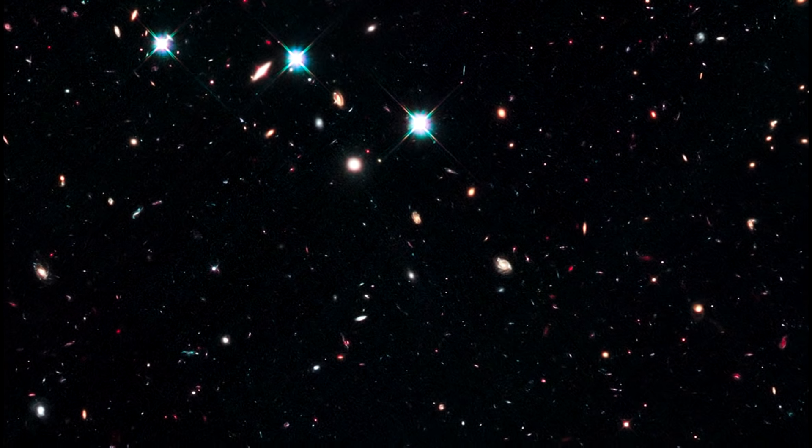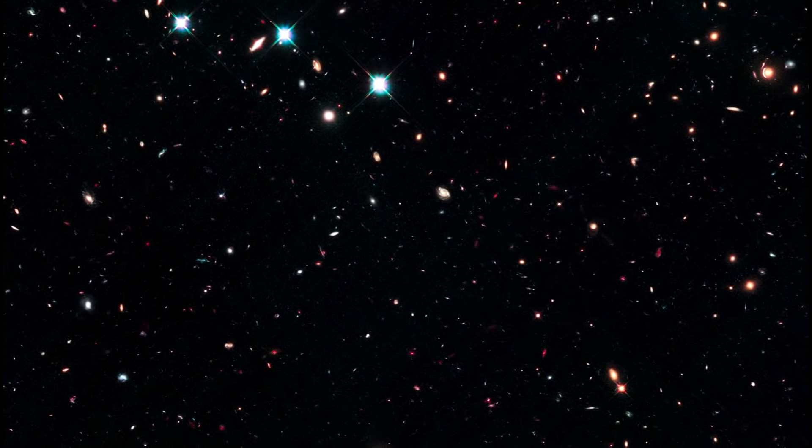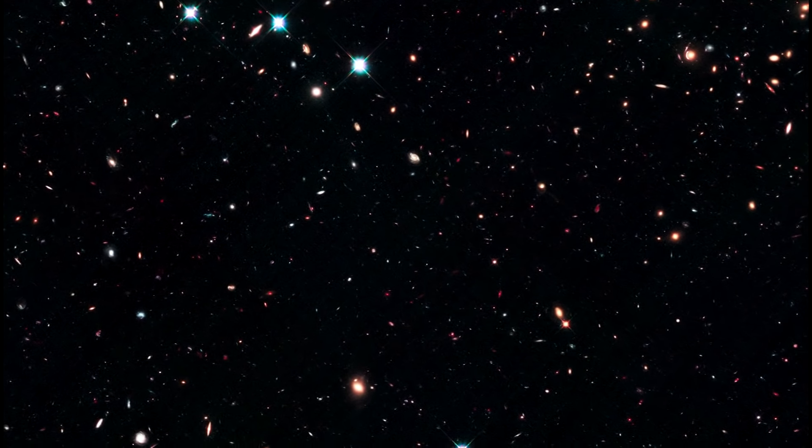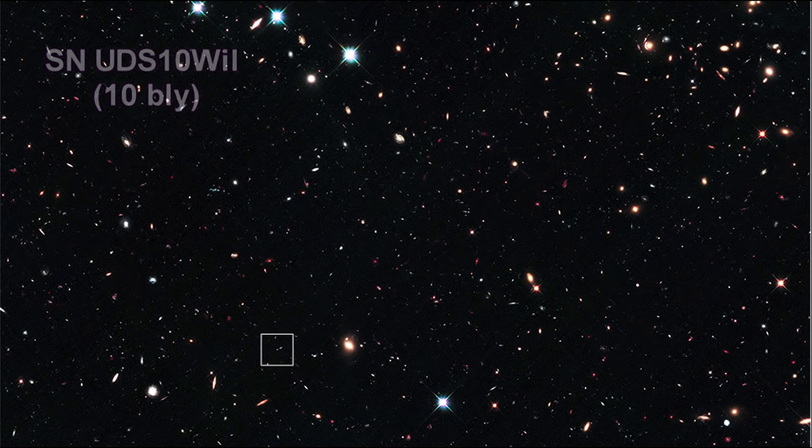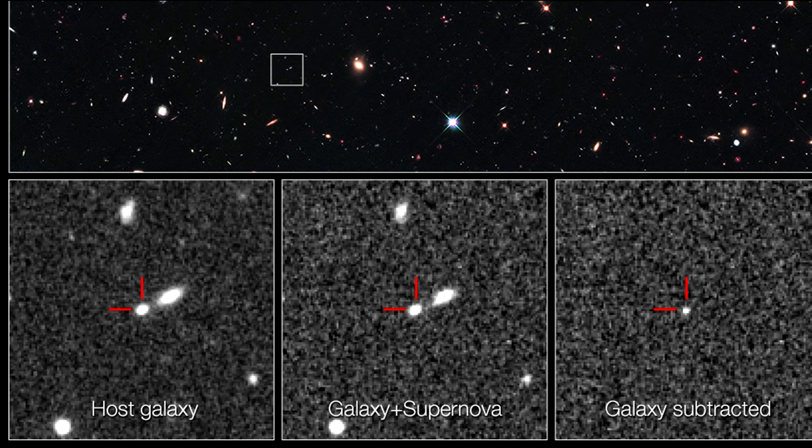If you recall, Type Ia supernova represent one of our most important standard candles, because they are so bright we can see them from very far away. In 2013, Hubble broke the record in the quest to find the furthest Type Ia with the discovery of SN UDS-10WIL, a supernova that exploded more than 10 billion years ago, at a time when the universe was in its early formative years and stars were being born at a rapid rate. The image at the far left shows the host galaxy without the supernova. The middle image, taken a year later, reveals the galaxy with the supernova. The supernova cannot be seen because it is too close to the center of the host galaxy. To detect the supernova, astronomers subtract the first image from the middle image to see the light from the supernova alone, shown in the image at the far right.